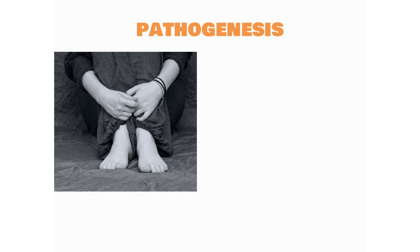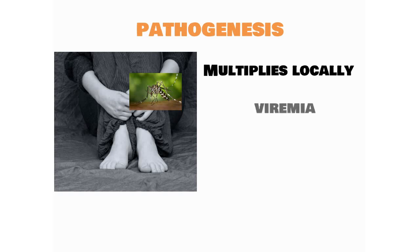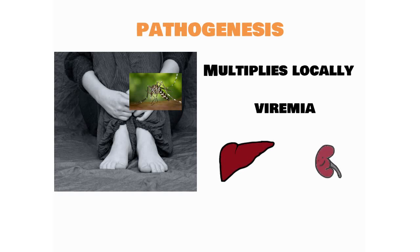Pathogenesis: an infected Aedes aegypti mosquito bites a healthy person, and the virus will initially enter the site of the bite and multiply locally. It then spreads to the bloodstream of the patient — that is called viremia. Finally, it disseminates to distant organs like the liver and kidney and so many other organs, causing systemic manifestations.